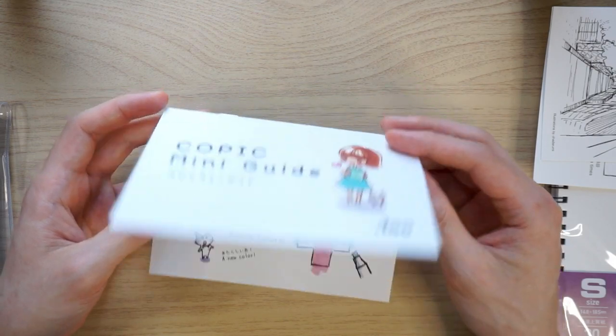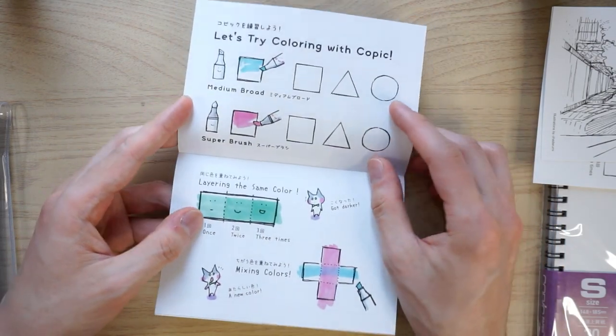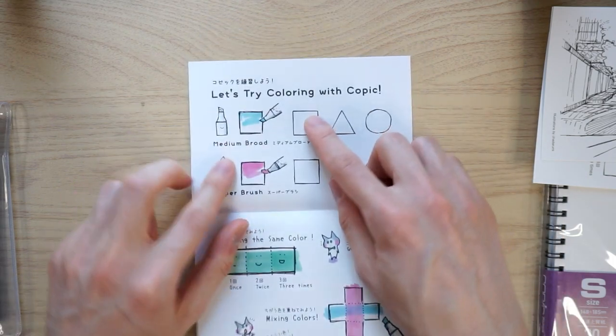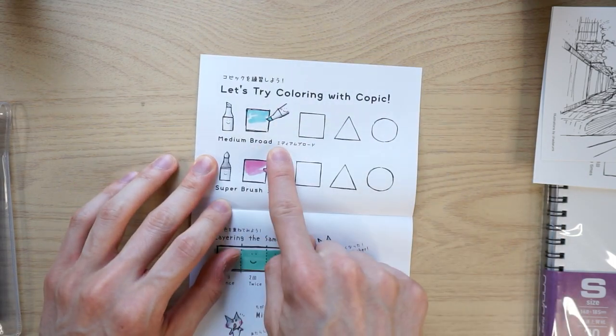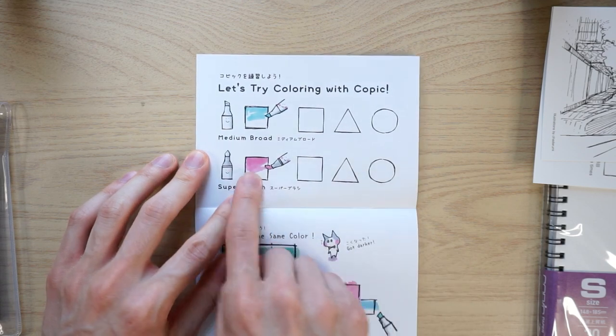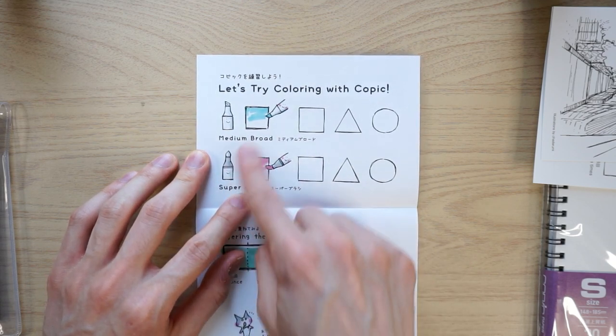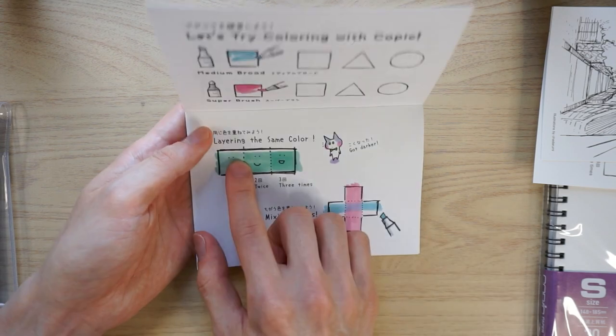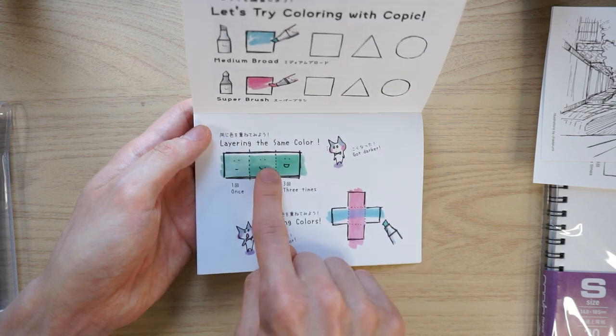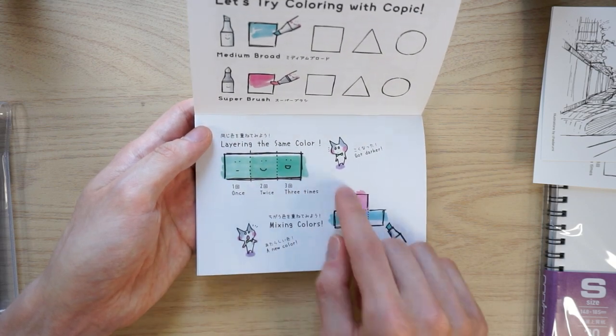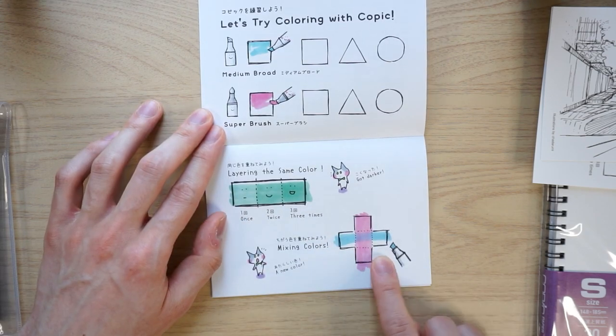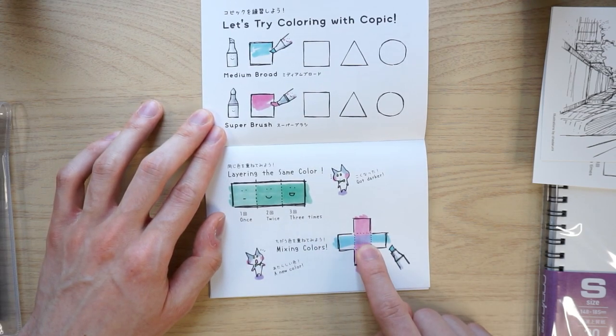All right, so I can't show you every page of this mini guide, but if we just have a quick look, you can see already on the very first few pages it's showing you the general use of these pens. You use the medium broad side to color in large areas. You can use the soft brush to have a slightly softer edge on it when you're drawing in these details. It also introduces you to some Copic pen concepts like the fact that you can layer the same pen multiple times and you can actually get darker colors without having to buy three separate pens. You can mix two colors together and get a completely different color.